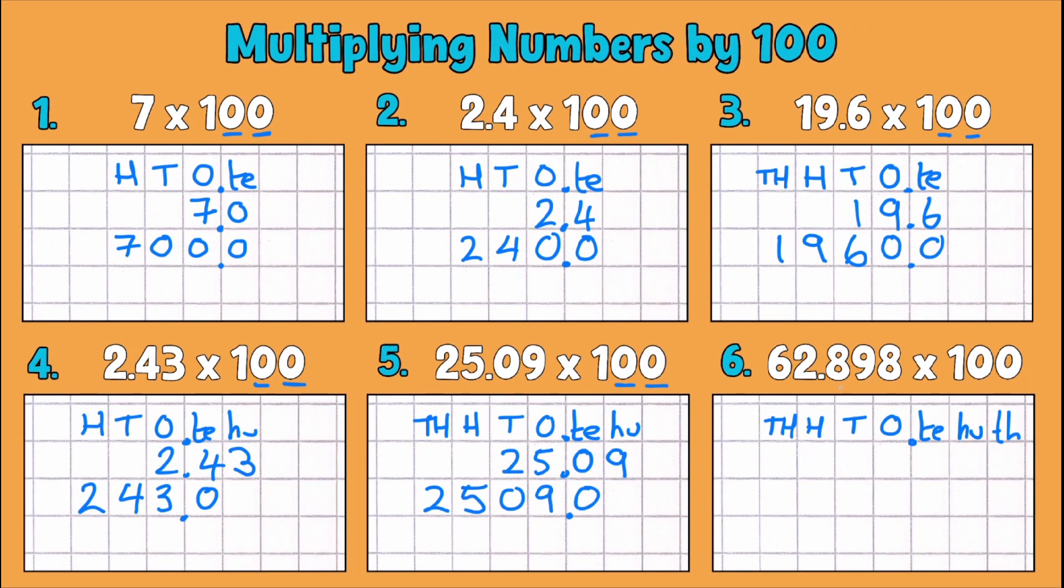So our final example has some thousandths in it. So we're going all the way to thousandths but we still do the same thing multiplying our number over to the left twice to make it a hundred times bigger. So we'll write our number into our place value grid. So 62.898. There we go.